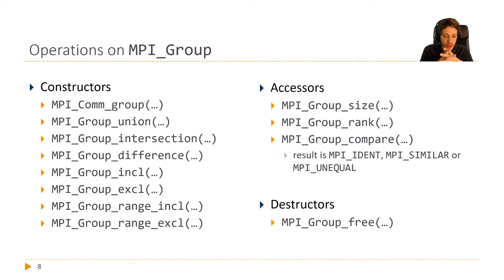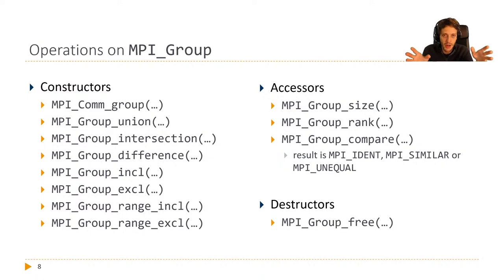There are also access operations similar to what you already know. We can query the size of a group, query the rank of ourselves in the group, and compare groups. The compare result can be MPI_IDENT — the exact same set in the same order — MPI_SIMILAR — same rank IDs but ordered differently — or MPI_UNEQUAL. And of course there's a destructor for freeing memory.